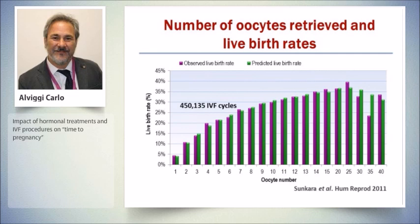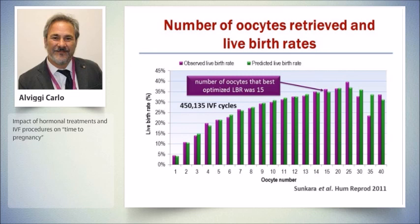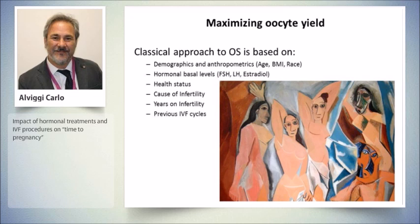The first take-home message is that the ideal number of eggs, if we consider this data in young, good-prognosis patients in fresh cycles, is fifteen. If we have the possibility to be as close as possible to this ideal number, we maximize the success rate for any given cycle, because we are talking about fresh cycles here. I think that talking about mild stimulation can be very difficult having this kind of information in mind.